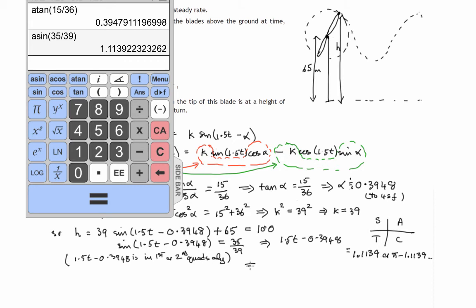Let's proceed to find what t is. 1.5t would have to add 0.3948 to both sides and then divide by 1.5. So t will be equal to 1.1139 plus 0.3948 and then divide by 1.5, or pi minus 1.1139 plus 0.3948 again, divided by 1.5. We don't want 1.5t, we want t, so we divide by 1.5.